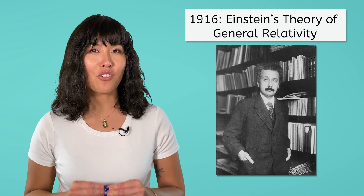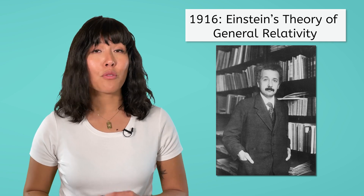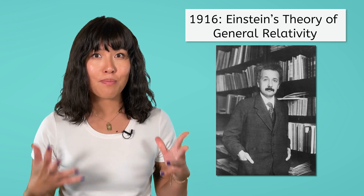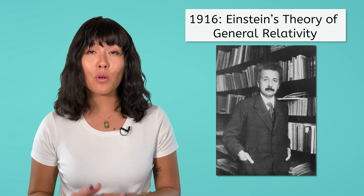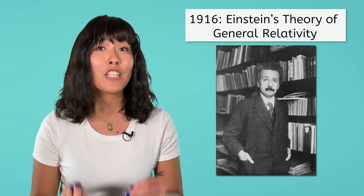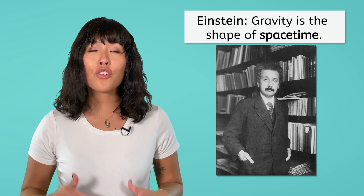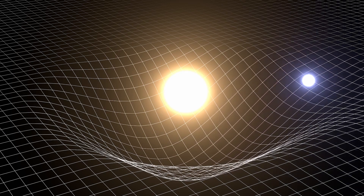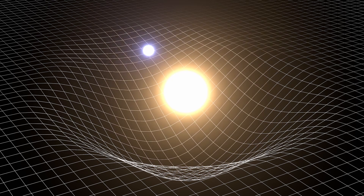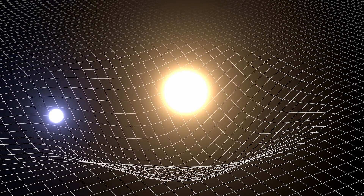Einstein didn't stop at special relativity. In 1916, 11 years later, he published his theory on general relativity. This theory redefines the concept of gravity and takes us on a journey through the warped fabric of space-time. Unlike the familiar gravity of Newton, which pulls apples to the ground and keeps planets in orbit as an invisible force, Einstein's gravity isn't a force at all. It's the shape of space-time itself, curved by the mass and energy within it. Picture space-time as a large funnel that a coin is rolling down — the coin spirals toward the sunken spot simply because it's following the curve. Planets orbit stars and moons orbit planets because they're following the curves in space-time created by those massive objects.